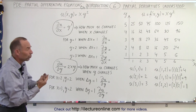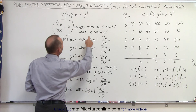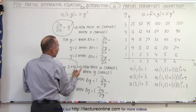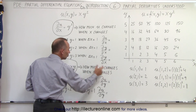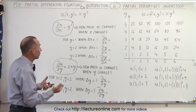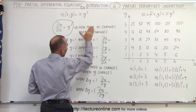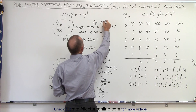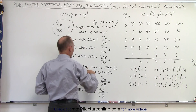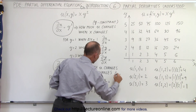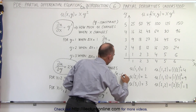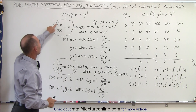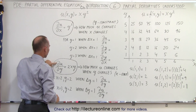Now we'll interpret what those partial derivatives actually mean. The partial derivative with respect to x tells us how much the function u changes when x changes, while y is held constant. The partial derivative with respect to y tells us how much u changes when y changes, while x is held constant. It's a little confusing sometimes, so we have to be careful: when we take ∂u/∂x, y is constant; when we take ∂u/∂y, x is constant.